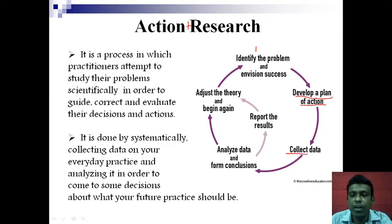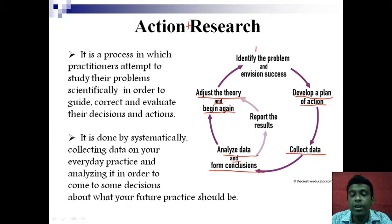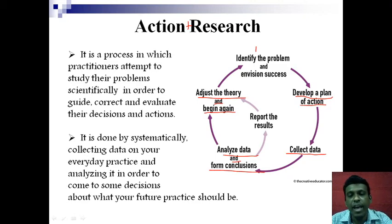Finally, adjust the theory and begin again. Based on data collected and analyzed, you may get new insights about how to do a particular thing in a better way. You adjust, rectify yourself and move on, and then the cycle continues from step one. This is a complete roundup of action research — it goes in a cyclic order, which is why it is also known as the action research cycle.